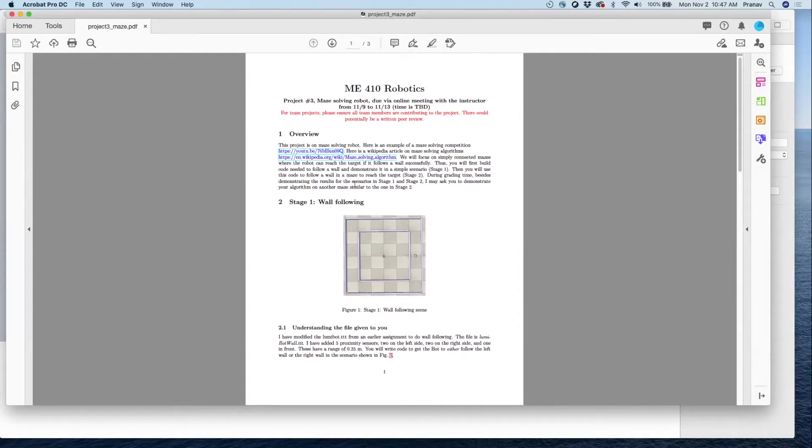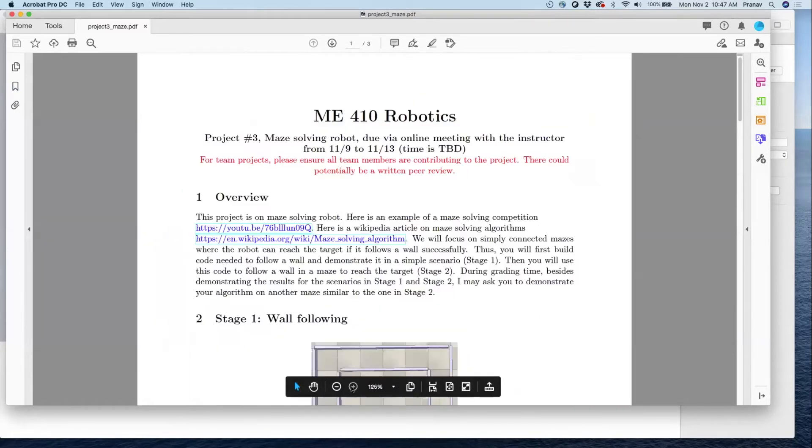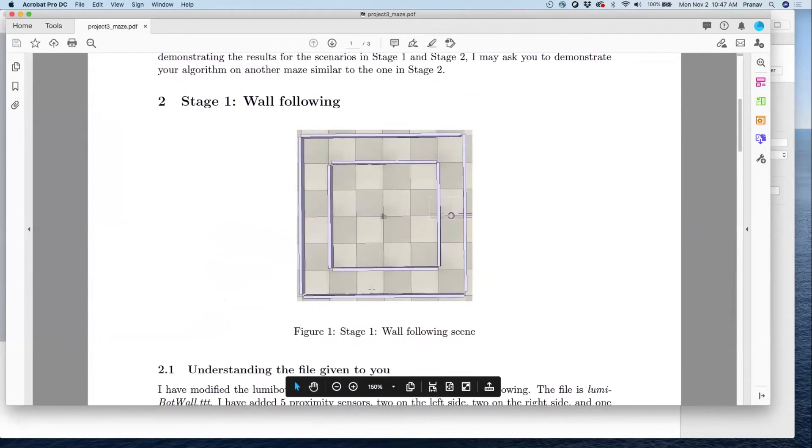It's going to be what is known as a maze solving robot. There are two parts to the project. Part one is to get this bot, it's called Lumi bot, which we have used in the past for one of the homeworks, to navigate this course by following a wall. You can either follow the wall on the left side using the left wall as the reference, or you can use the right wall as the reference.